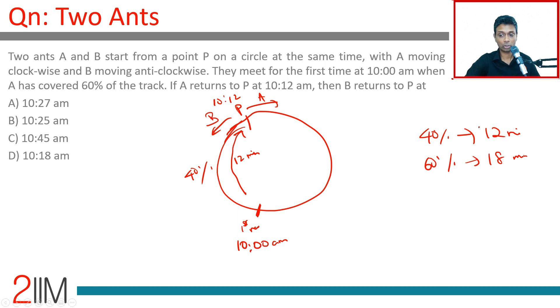So the time taken is 18 minutes for the first 60%. For the total distance, A takes 30 minutes. Both of them started 18 minutes before 10:00, so the start time is 9:42 for both of them.